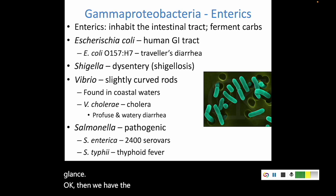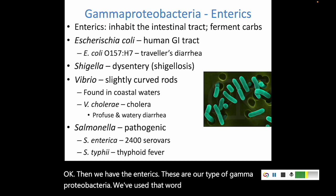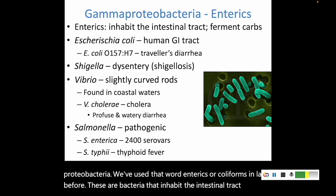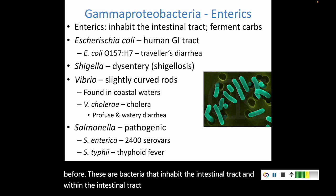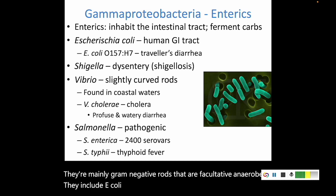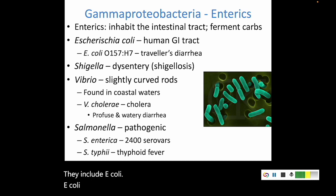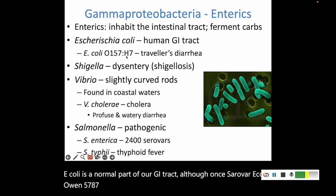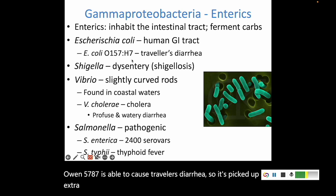Then we have the enterics, a type of gamma proteobacteria — also called coliforms in lab. These are bacteria that inhabit the intestinal tract and ferment carbohydrates there. They are mainly gram-negative rods that are facultative anaerobes. They include E. coli, which is a normal part of our GI tract, although one serovar, E. coli O157:H7, is able to cause traveler's diarrhea because it has picked up an extra toxin that it can produce.